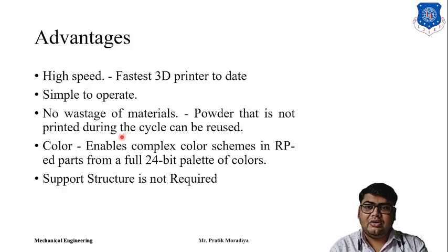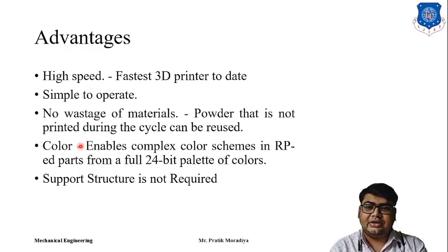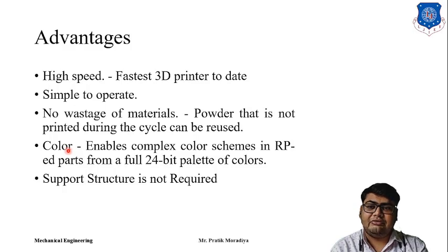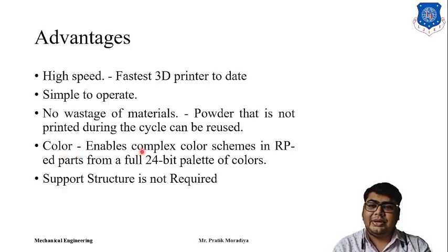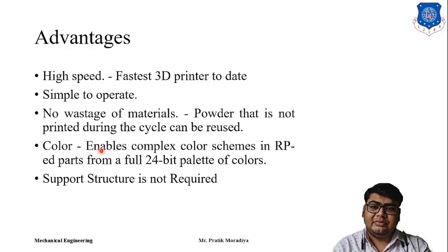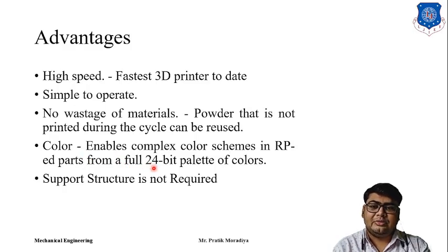Nowadays, color 3D printers are available, similar to 2D color printers with multiple cartridges. A color 3D printer has one cartridge for binder and three cartridges for different colors. Color is sprayed along with the binder, so the part being built will have that color. Combinations of three colors can produce a full 24-bit palette, which is 3 raised to the power of 24 different colors.